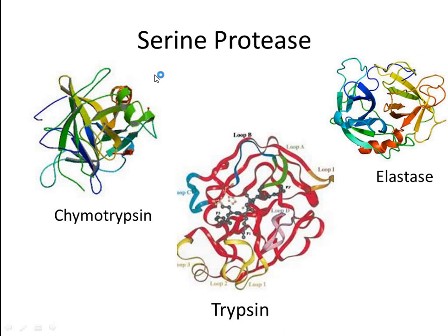Most of the catalytically important amino acid residues correspond exactly among these enzymes. When the tertiary structure of all three enzymes is determined by X-ray crystallography, they are found to be very similar. When the reaction mechanism of all three is studied, they are believed to function by an identical mechanism. All these enzymes show a similar pH optimum of about pH 8.